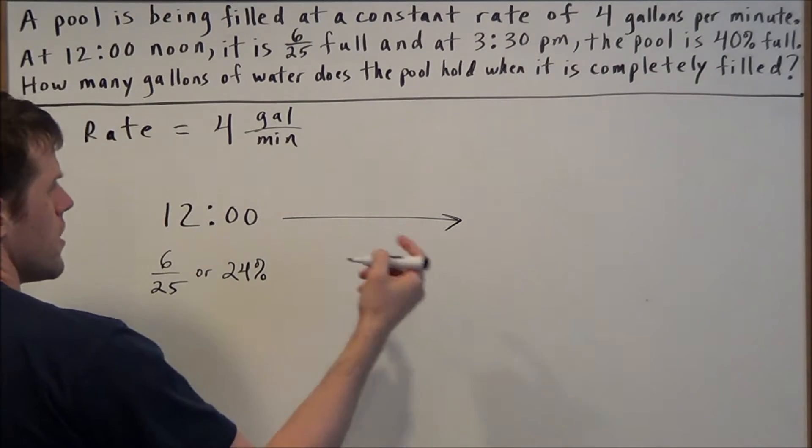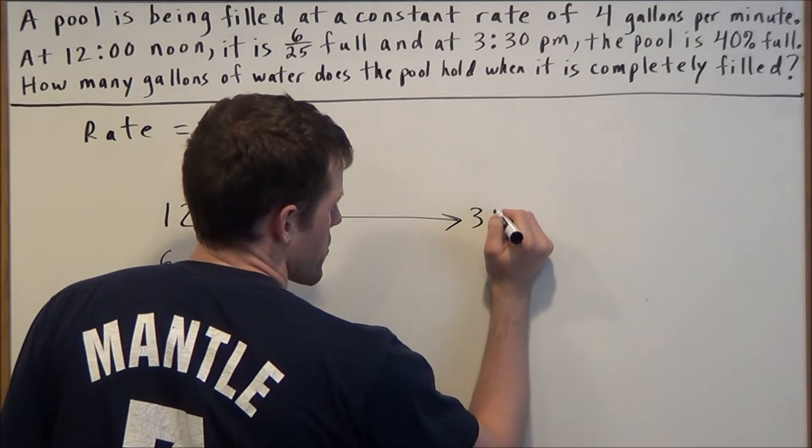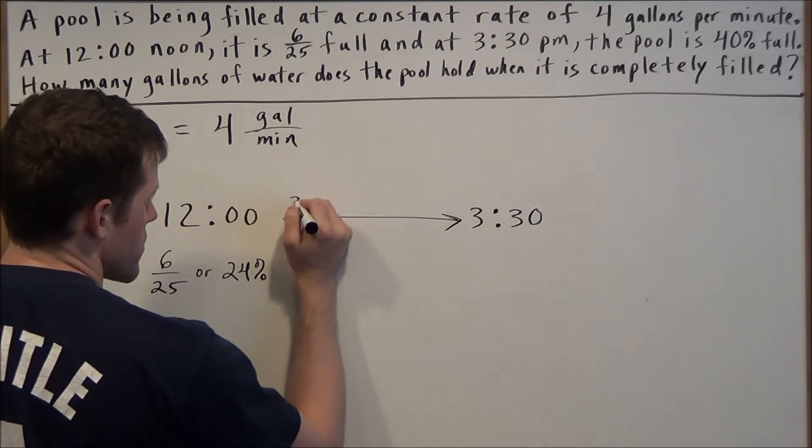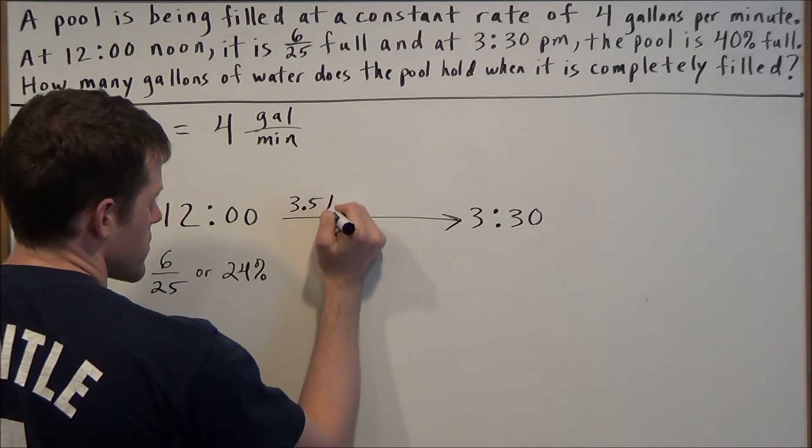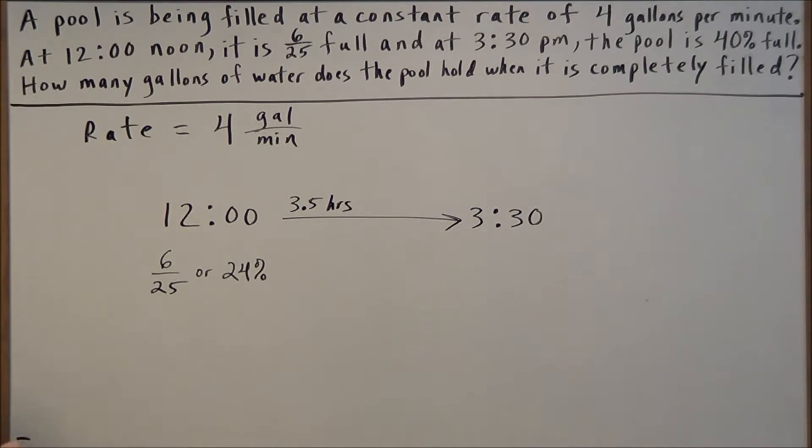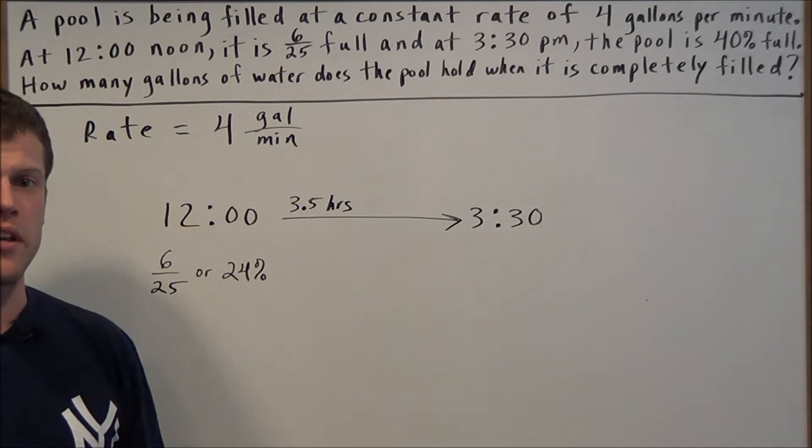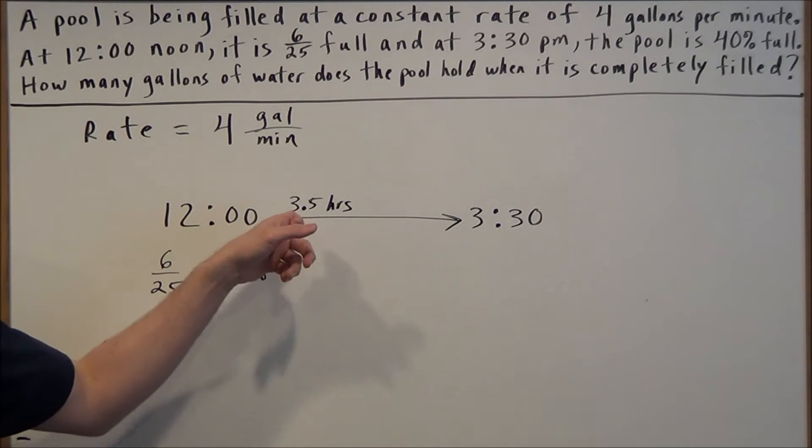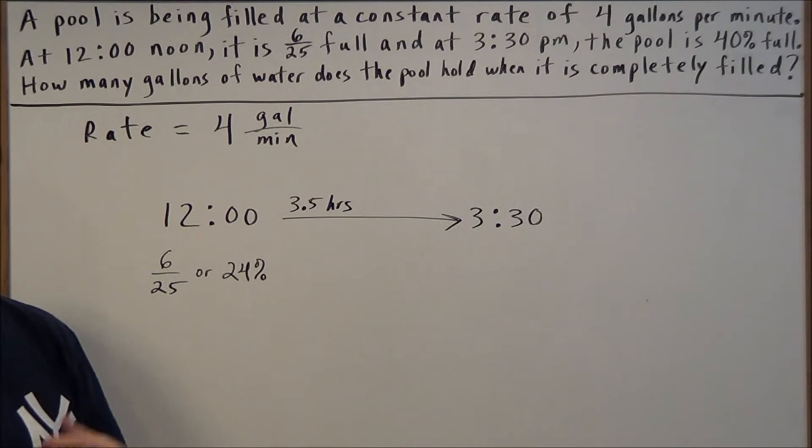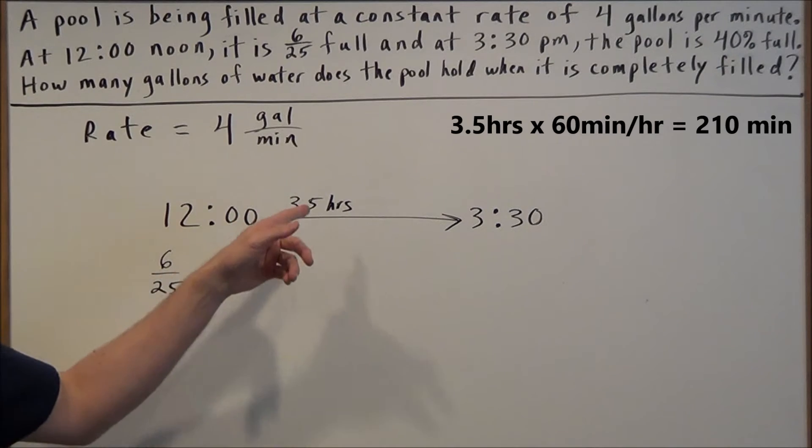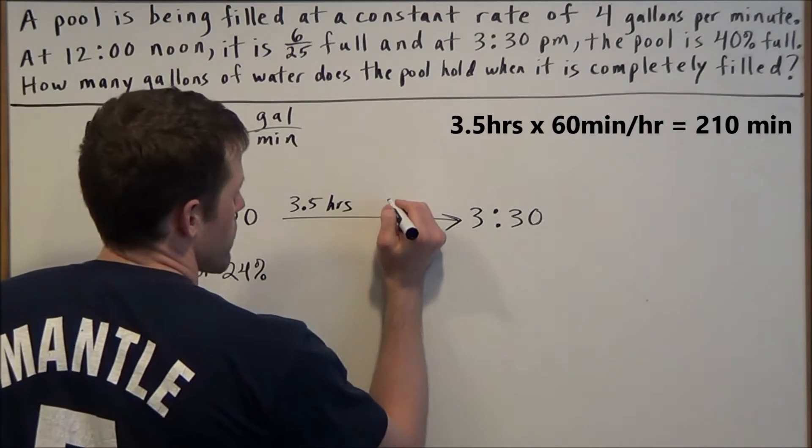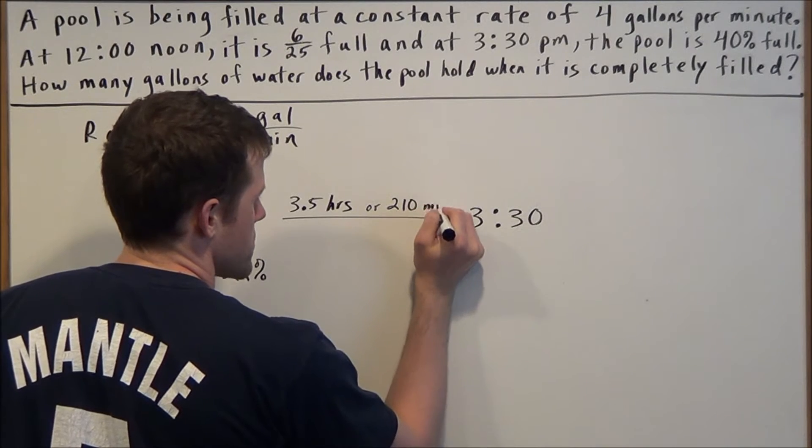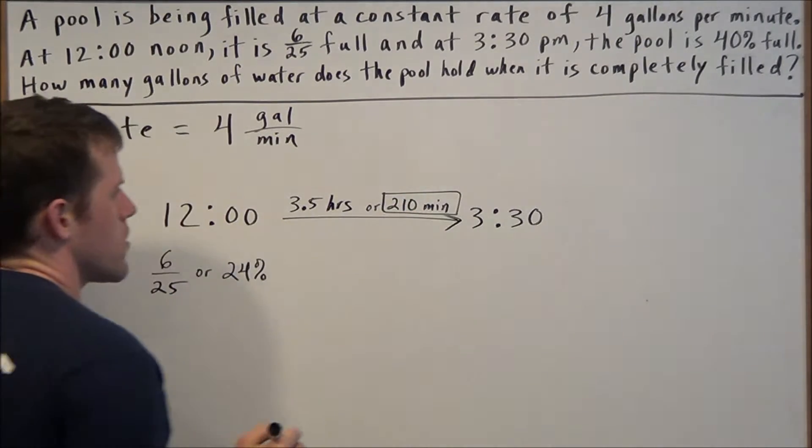From 12 o'clock to 3:30, that's three and a half hours, 3.5 hours. But considering the fact that our rate is in minutes, we can convert this to minutes by multiplying 3.5 hours by 60 minutes over one hour, or we're really just multiplying this by 60. And we know that equals 210 minutes.